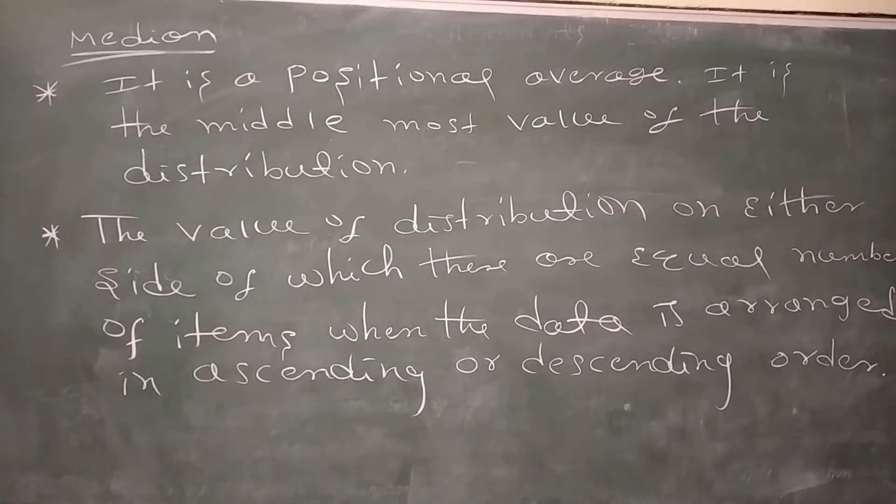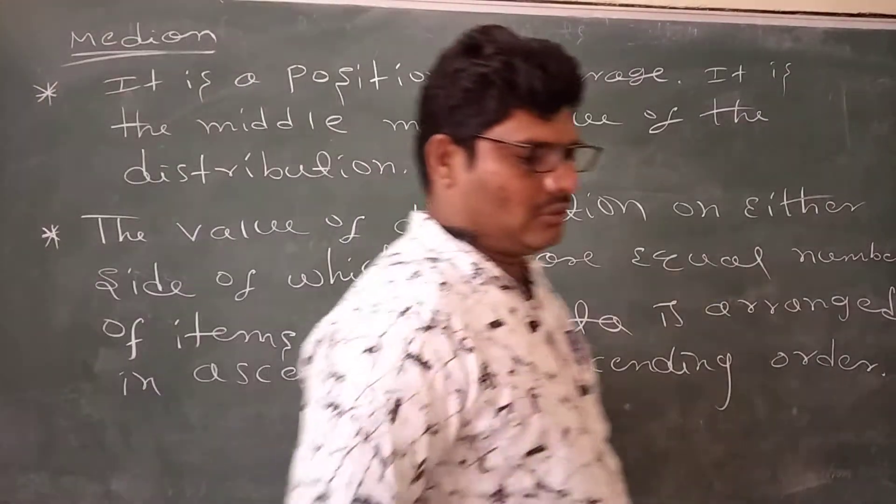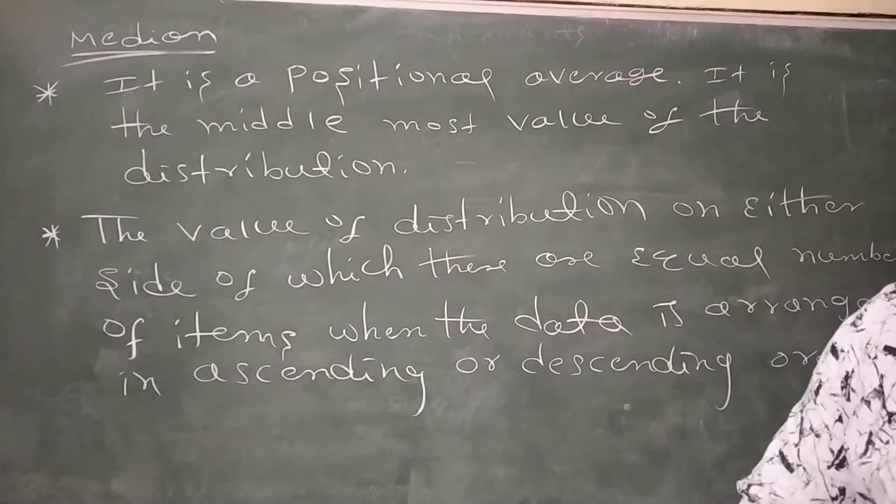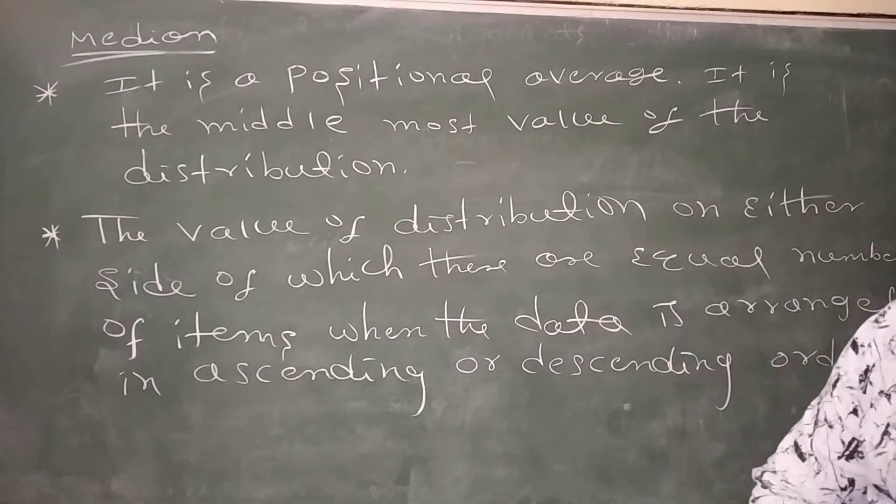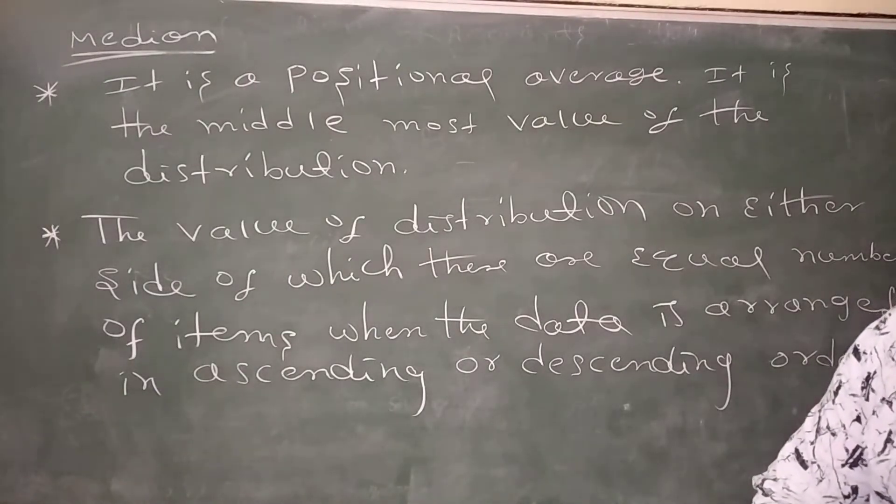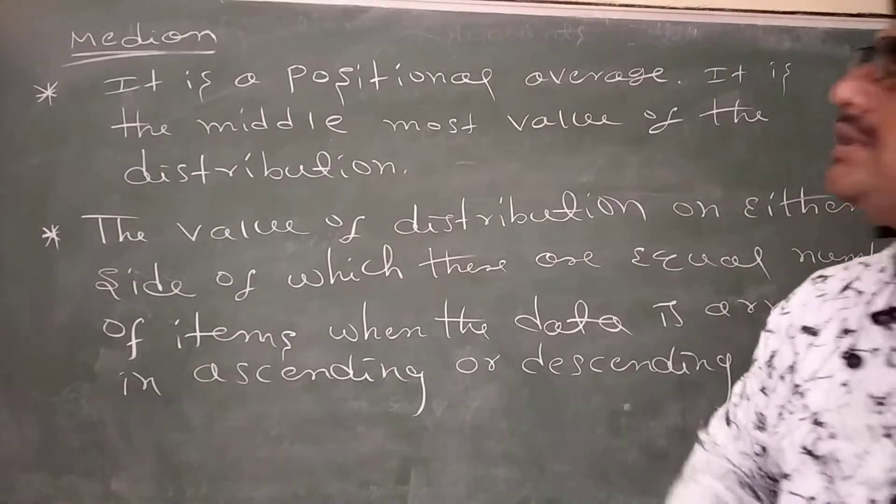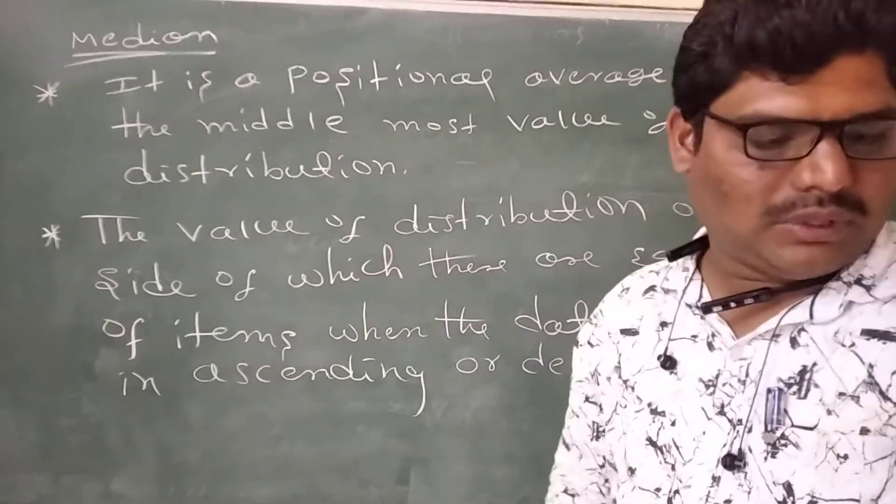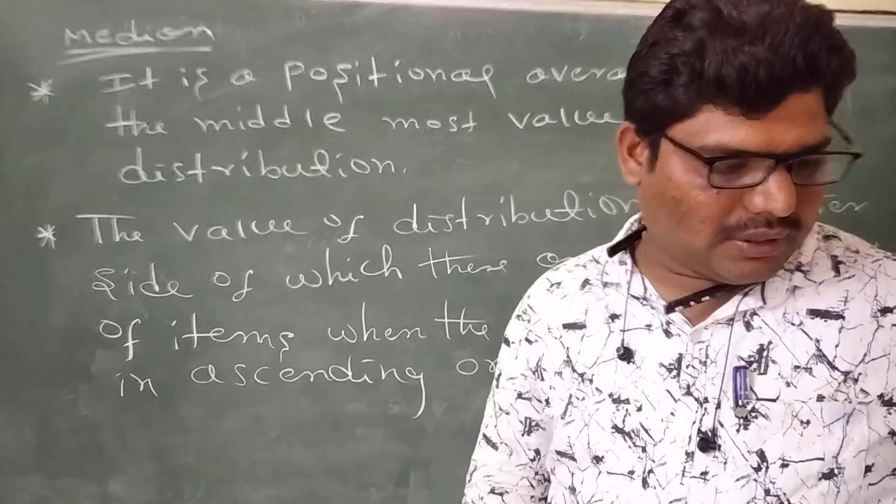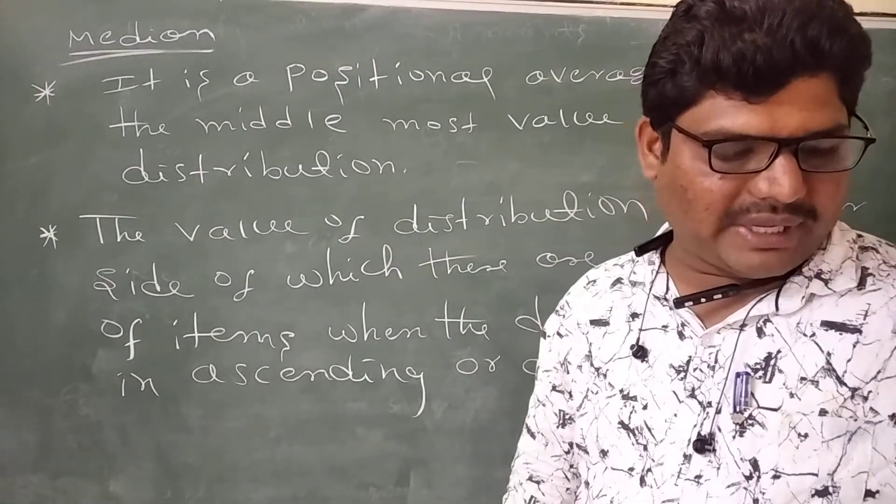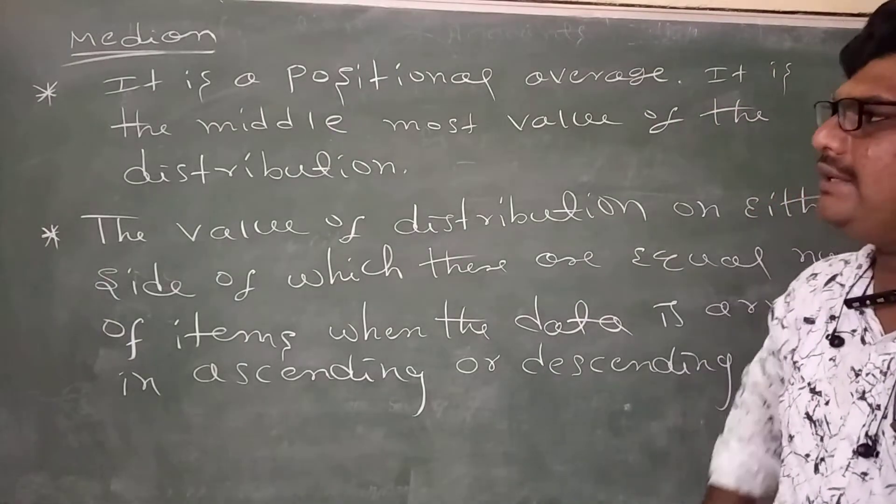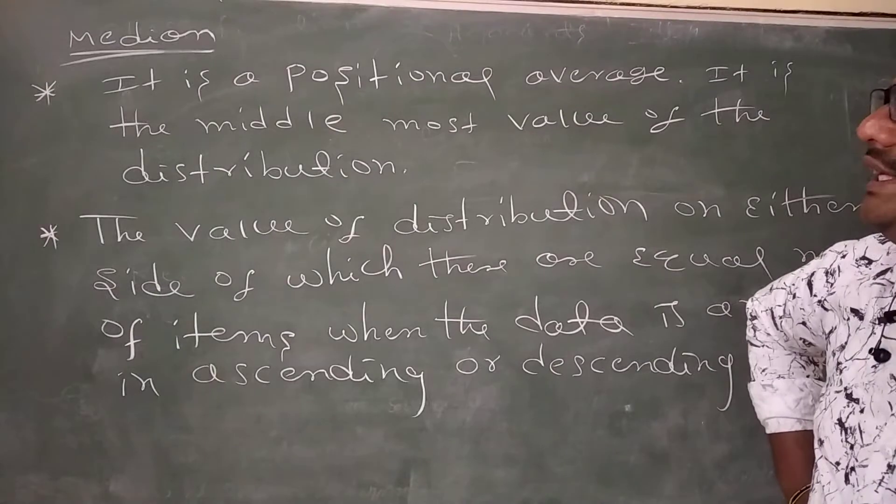Good morning. Today, I will explain the second method of measures of central tendency. The second method is median. The first method I explained in previous classes. The first method concept is arithmetic mean. The second concept is median.